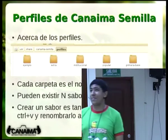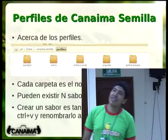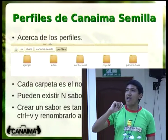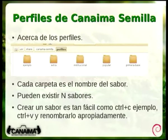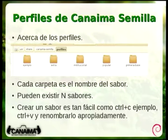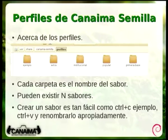Si ustedes abren la carpeta perfiles por primera vez, van a encontrar cinco carpetas: los perfiles oficiales de los sabores de Canaima que se construyen con Canaima Semilla. Hay un perfil de ejemplo que fácilmente pueden copiar y pegar, cambiándole el nombre de la carpeta —ese será el nombre del sabor. Para hacer Canaima Popular existe la carpeta 'popular'; para Canaima Institucional, la carpeta 'institucional'. El perfil de ejemplo no funciona si tratan de construirlo. Pueden existir tantos sabores como carpetas.